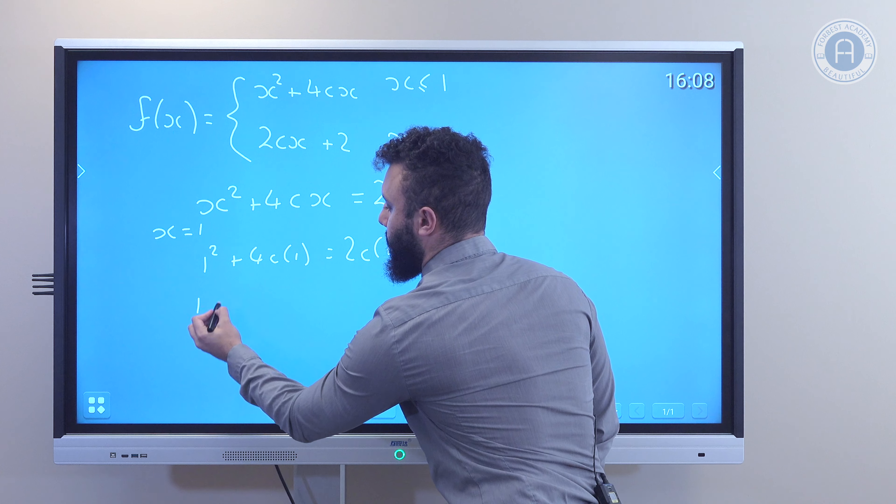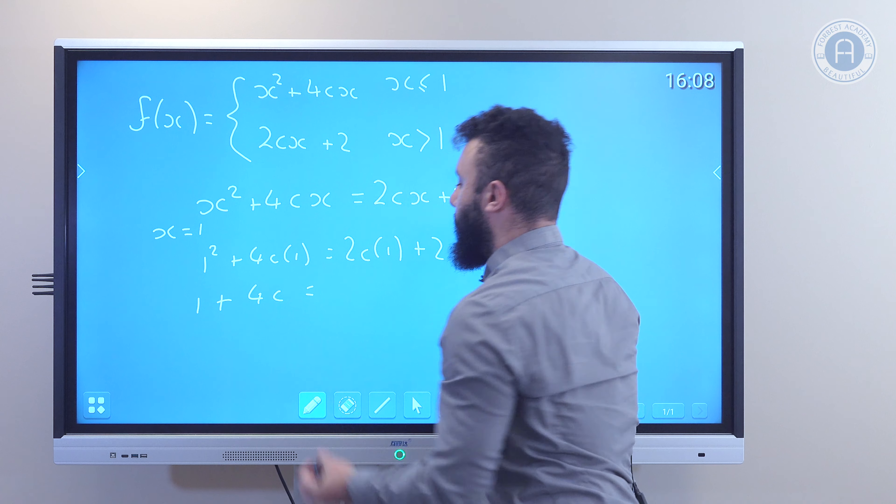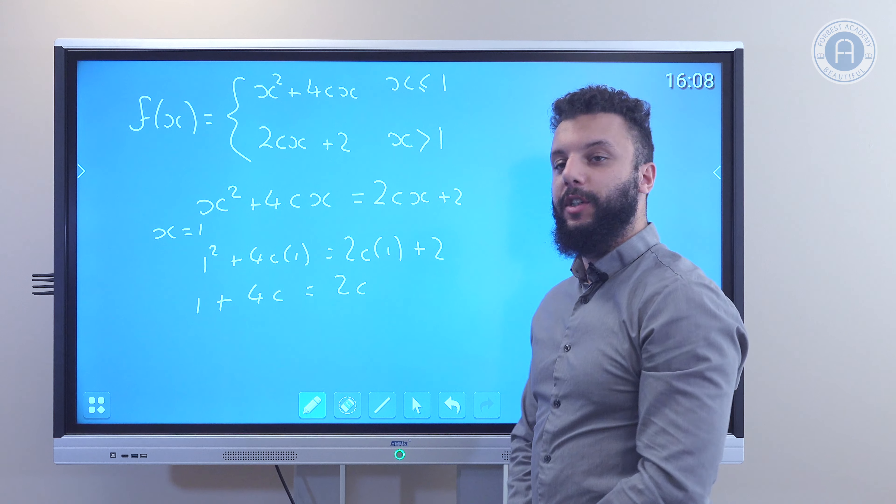So I'm going to form an equation where I'm going to have the first piece, x squared plus 4cx, is equal to the second piece, 2cx plus 2.